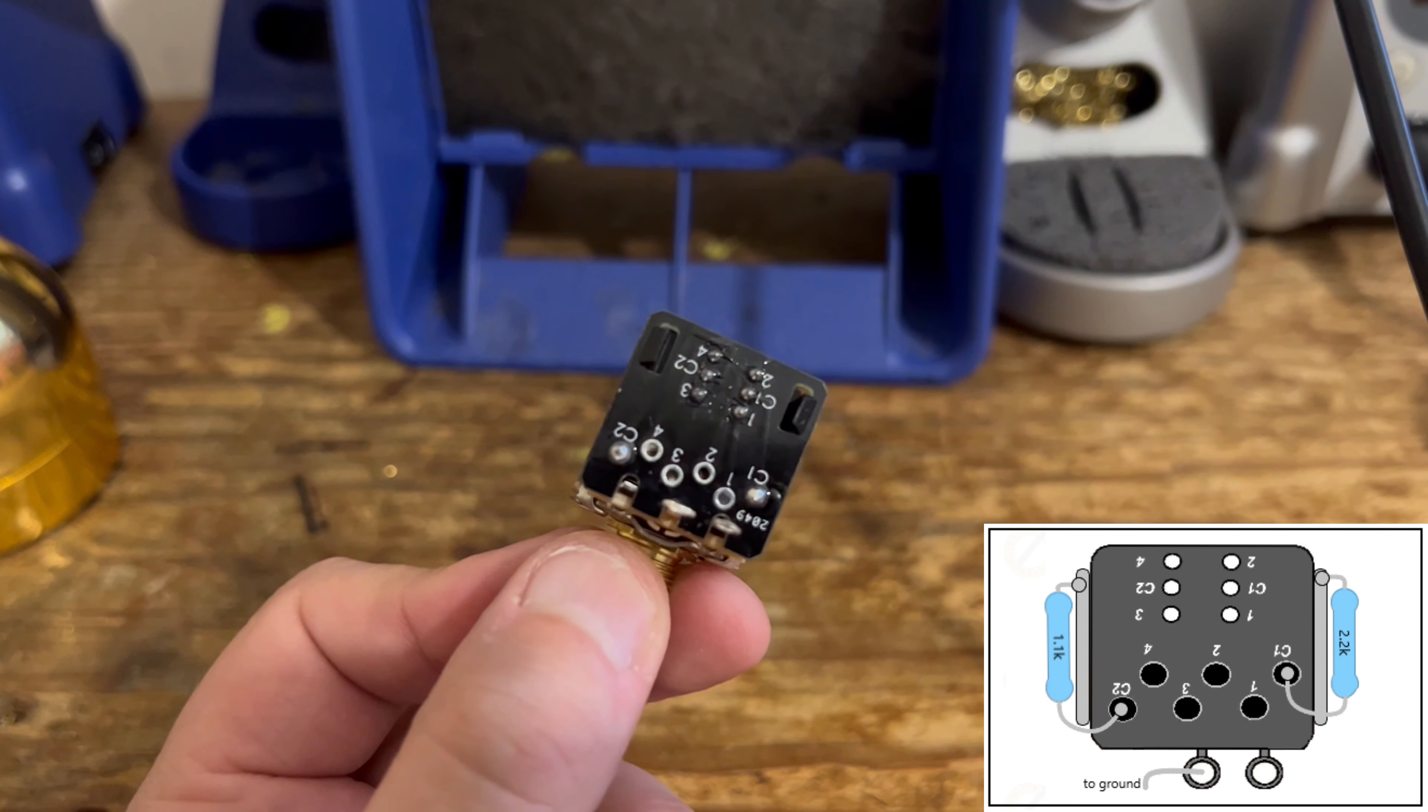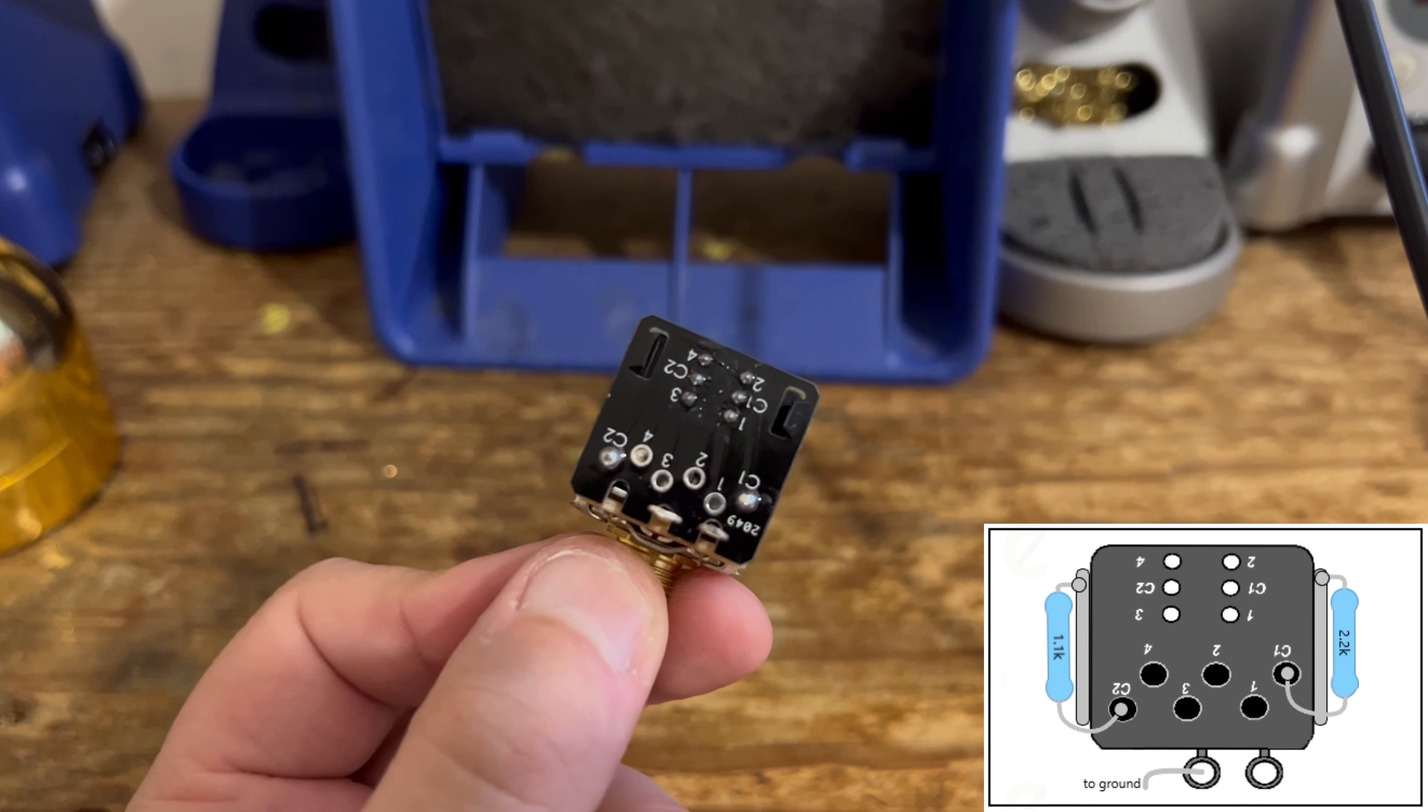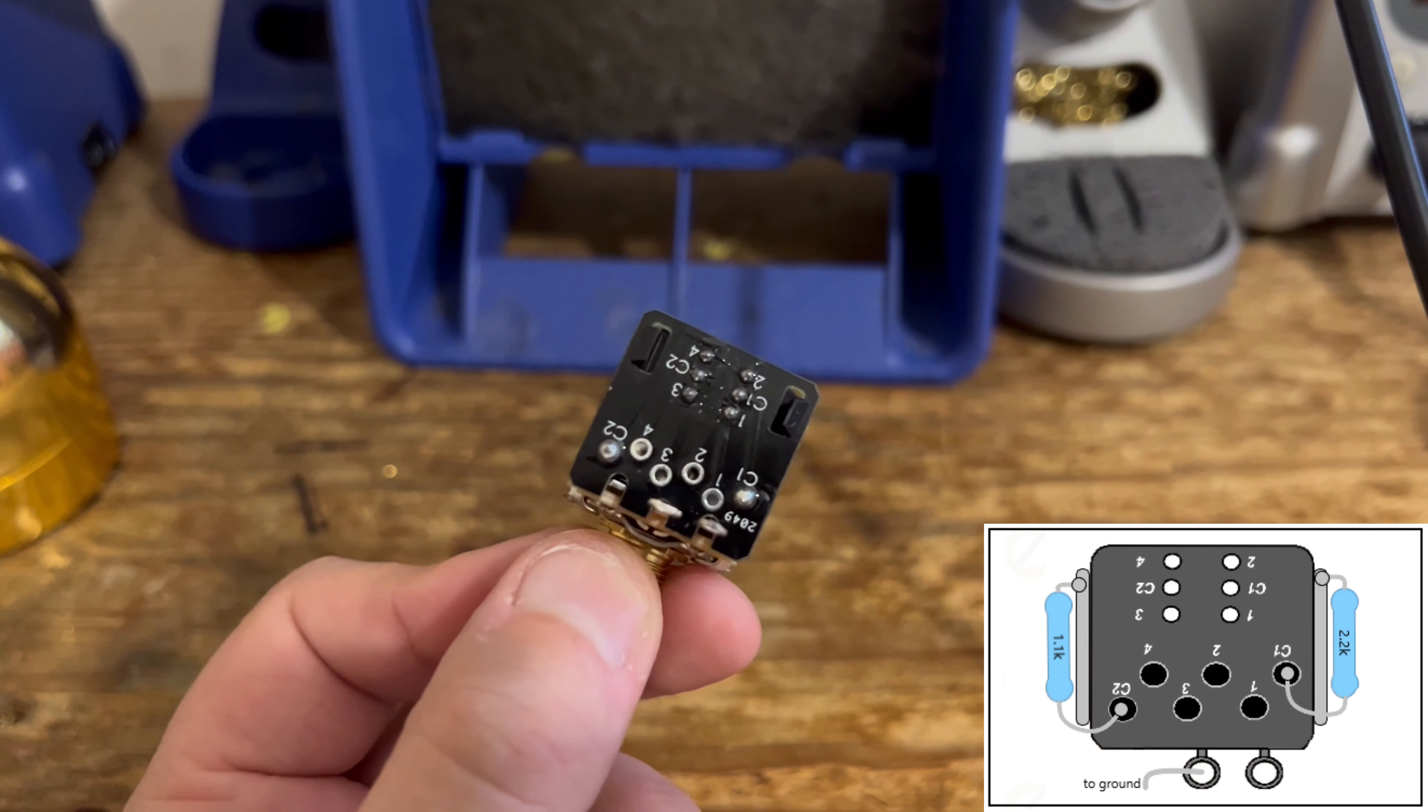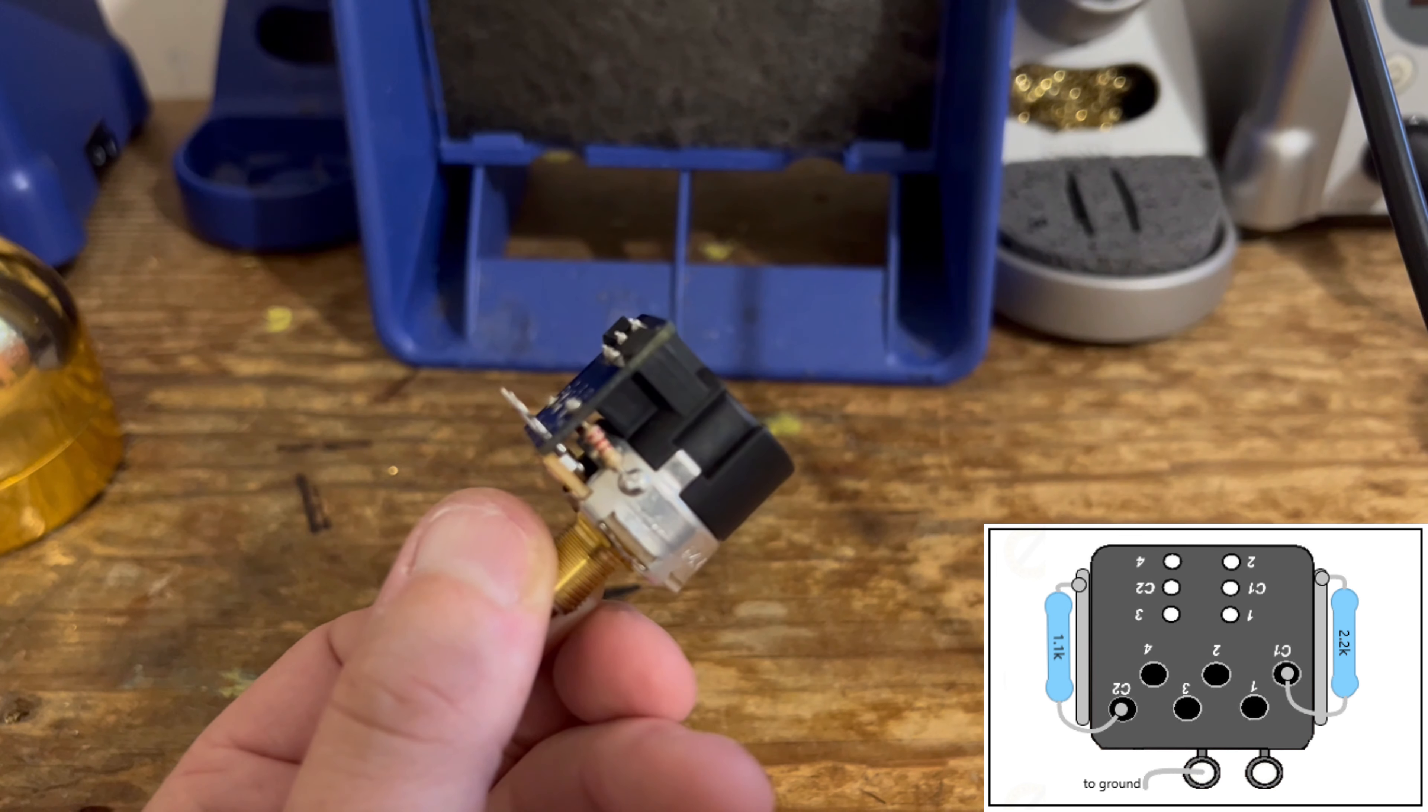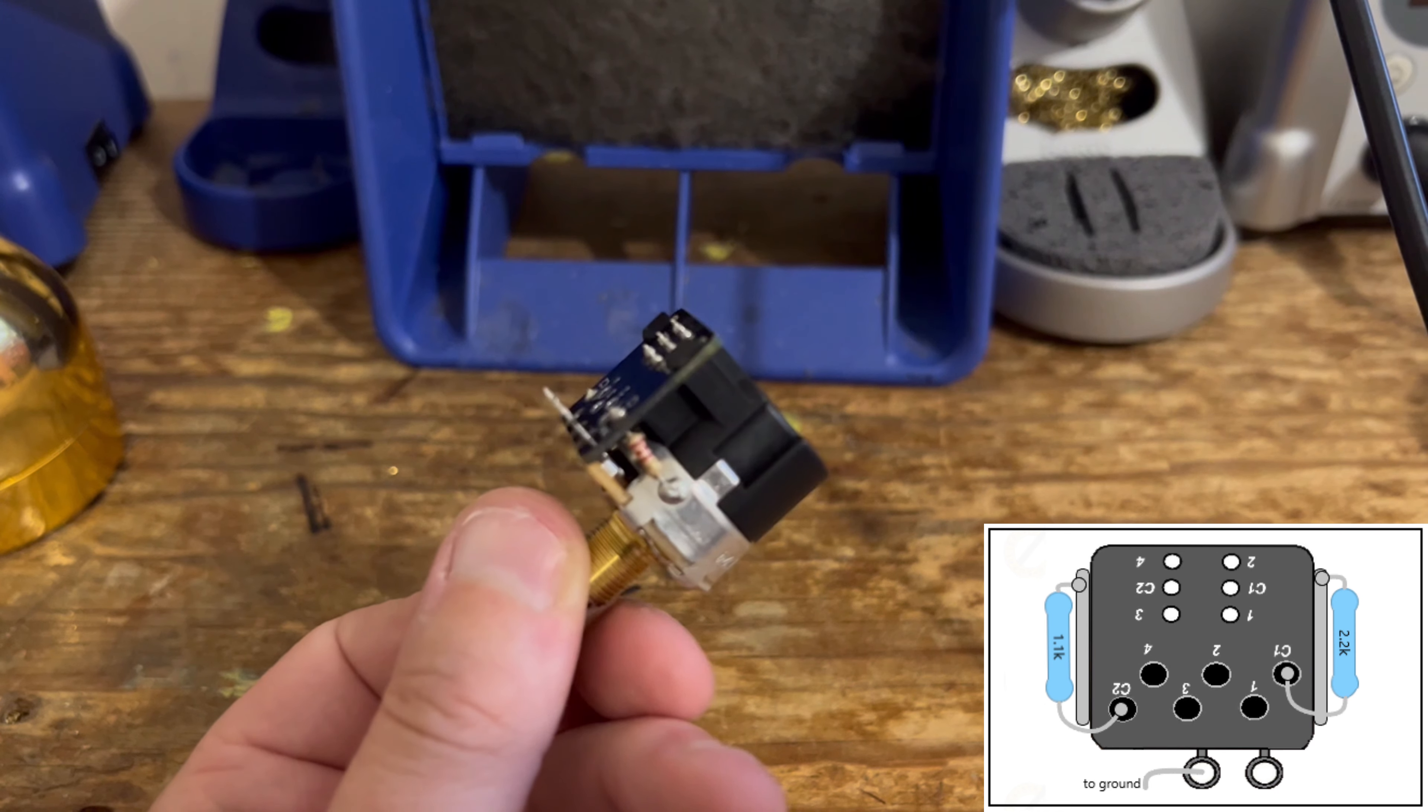And on the opposite side, in hole C1, which is bottom right-hand corner, as you can see there, we have a 2.2K resistor, and this is for the bridge pickup.